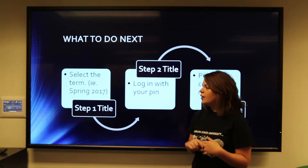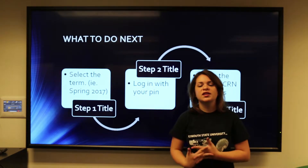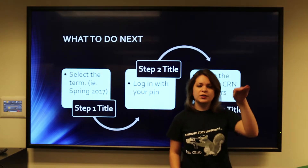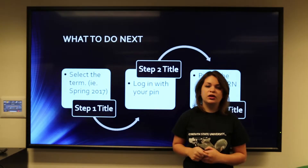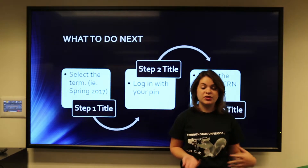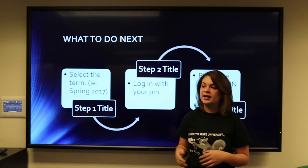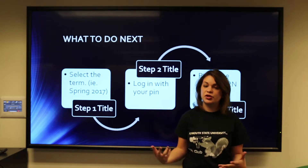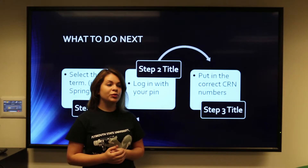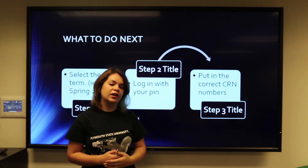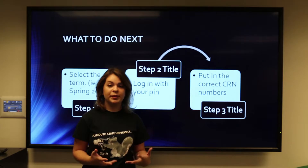Now there's nothing that directly says registration for classes. You're going to want to click Add/Drop Classes, because technically you're adding in classes for the next semester. After that, a drop-down arrow is going to appear and it's going to ask you which term you're selecting for. So let's use the example of Spring 2017 since that's the next one coming up, so I would click Spring 2017.